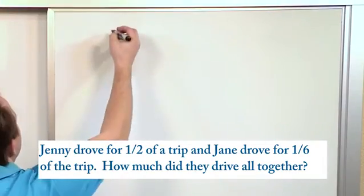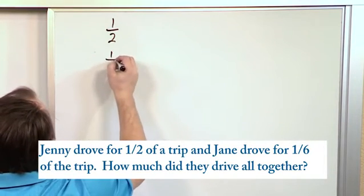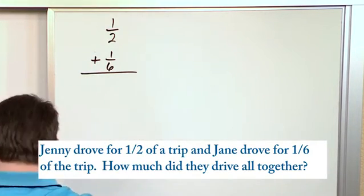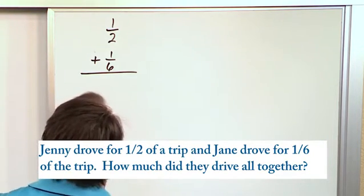So since Jenny drove for one-half, we'll represent that as one-half, Jane drove for one-sixth, and we'll add these together like this. So now we're just back to doing our math. We do not have a common denominator, so we have a two and a six.